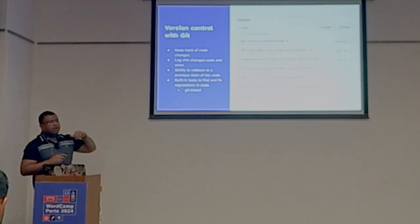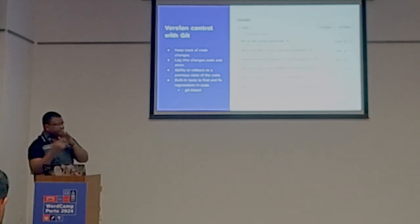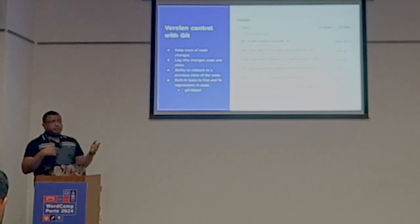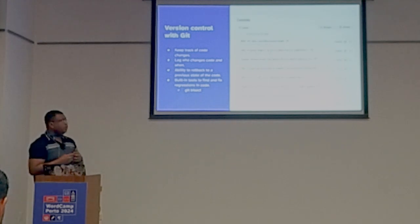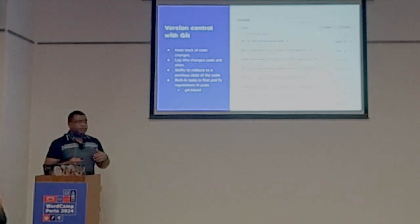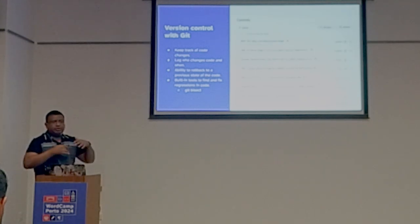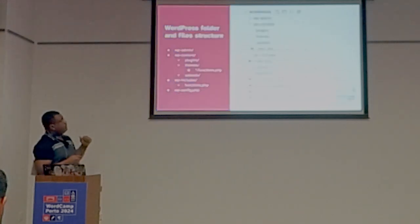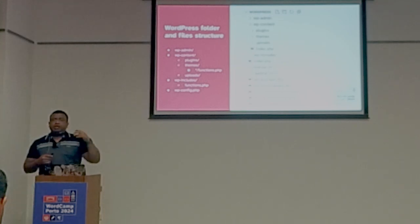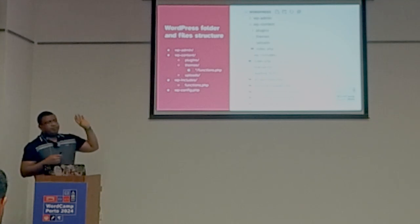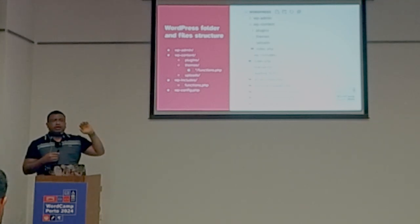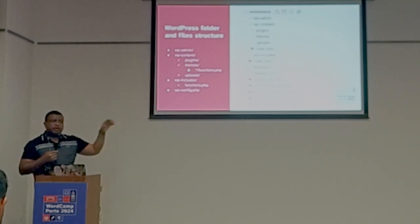Version control with Git, from a high-level overview, allows you to keep track of changes — you will know who made a change and when. If you ever need to roll back because of a mistake or something malicious on your website, you can go to a previous version. Git also provides built-in tools to find and solve problems. It is important to get familiar with the WordPress folder structure, particularly wp-content.